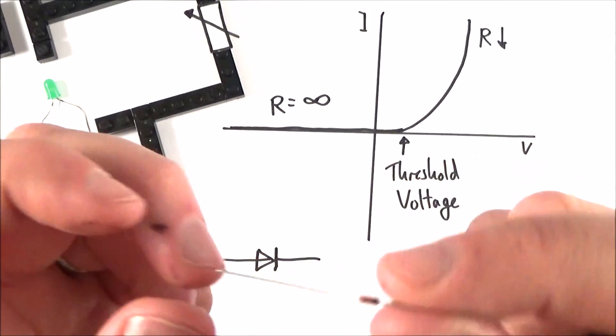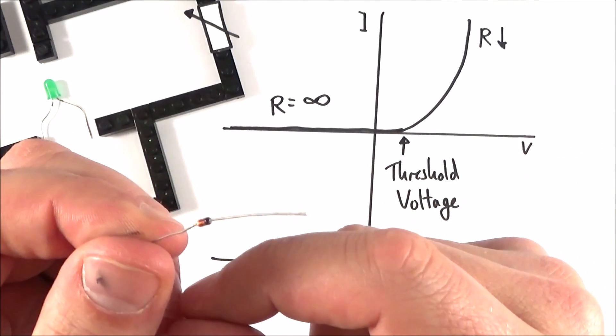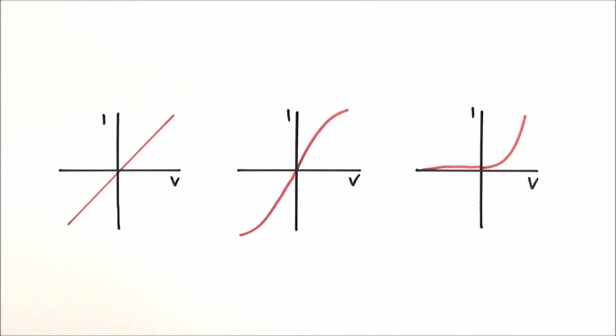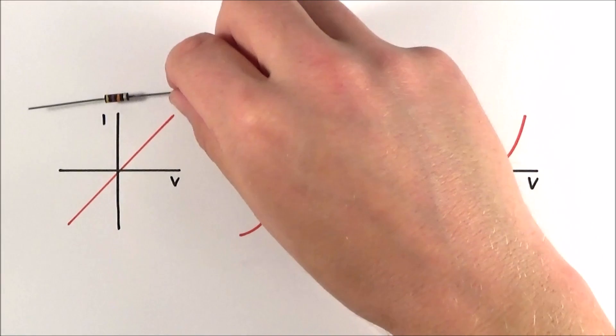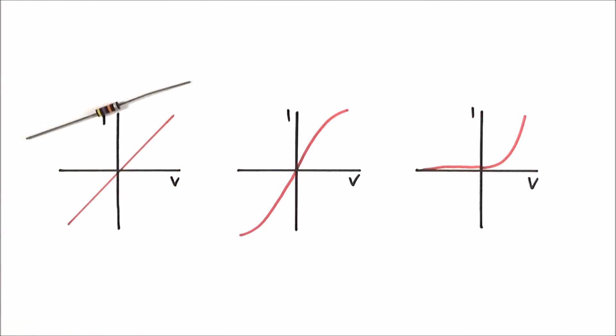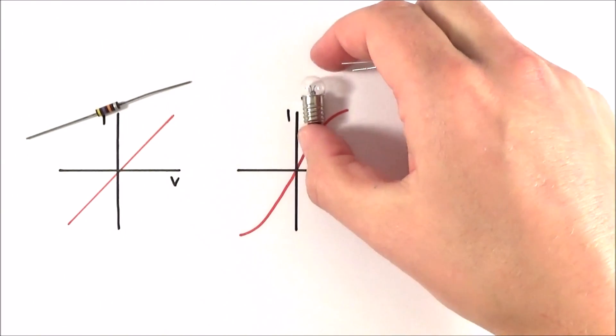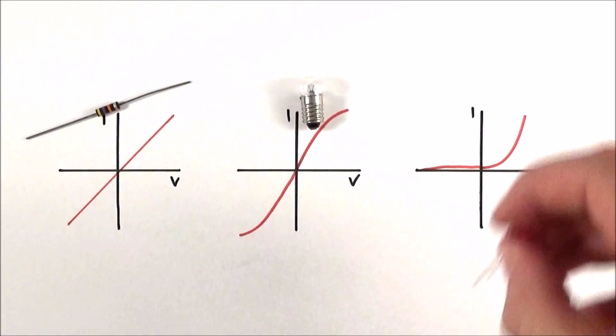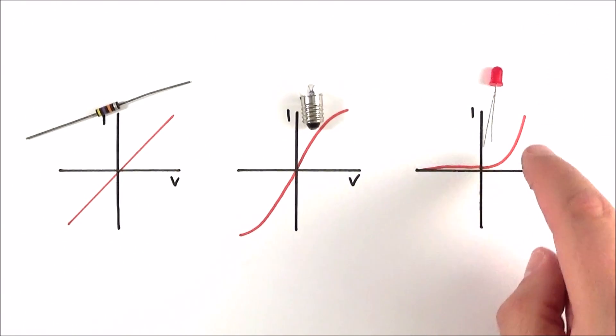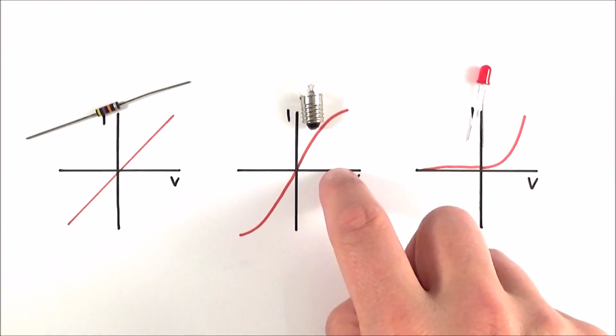So to summarize, here are the IV characteristics of components that you need to know about. We have a resistor or an ohmic conductor, we have a filament lamp, and we also have a diode or an LED. What we can see here just from these characteristics, we can then identify what kind of component we have in a circuit.